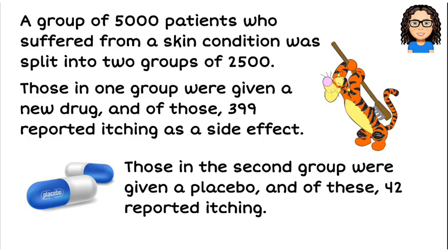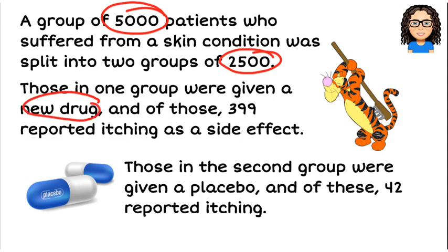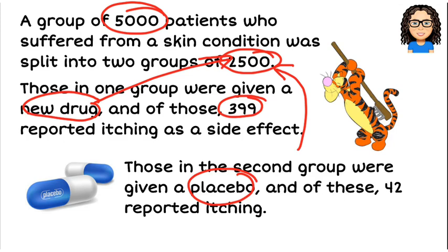Here's our question. We have a group of 5,000 patients who suffer from a skin condition, split into two groups of 2,500. The people in one group were given the new drug, and from those 2,500, 399 reported itching as a side effect. Those in the second group of 2,500 were given a placebo, and from these, 42 reported itching.